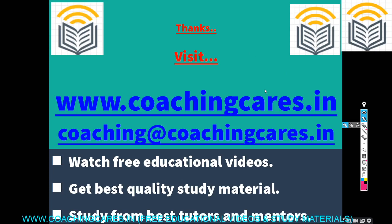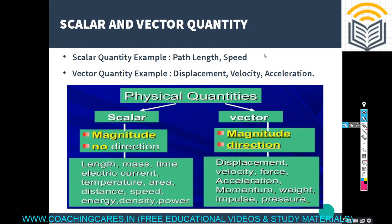Consider a person moving from point A and reaching a final position B along a curved trajectory. The distance covered — the length of the whole path along this trajectory — is the path length. It doesn't matter in which direction the person is moving along the path; only the total distance matters. This is the scalar quantity: path length.